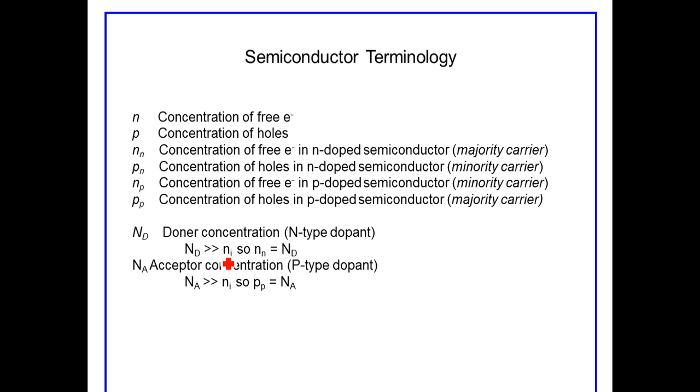in N-doped semiconductors, N sub N, the concentration of electrons in the N-doped semiconductor will be closely approximated by the doping concentration or the donor concentration. So N sub D is the donor concentration.